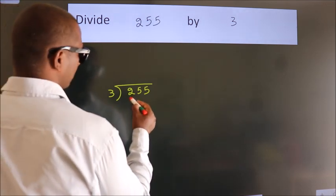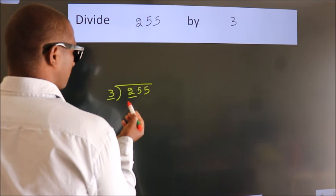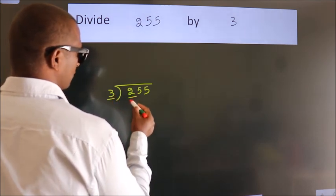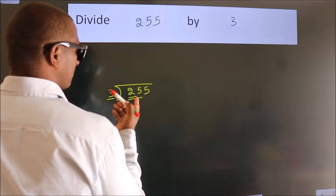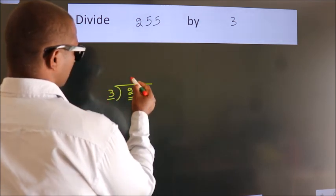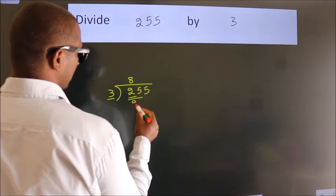Here we have 2. Here 3. 2 smaller than 3, so we should take 2 numbers: 25. A number close to 25 in the 3 table is 3 times 8, which is 24.